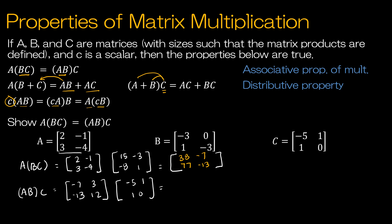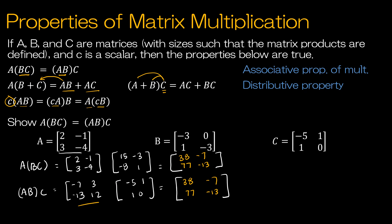Hopefully when I multiply this out I get the exact same values. Taking negative 7, 3: 35 plus 3 is 38, and negative 7 plus 0 is negative 7. Looking at the other row, negative 13, 12: 65 plus 12 is 77, and negative 13 plus 0 is negative 13. So we can see we did end up at the exact same solution using the associative property of matrix multiplication.